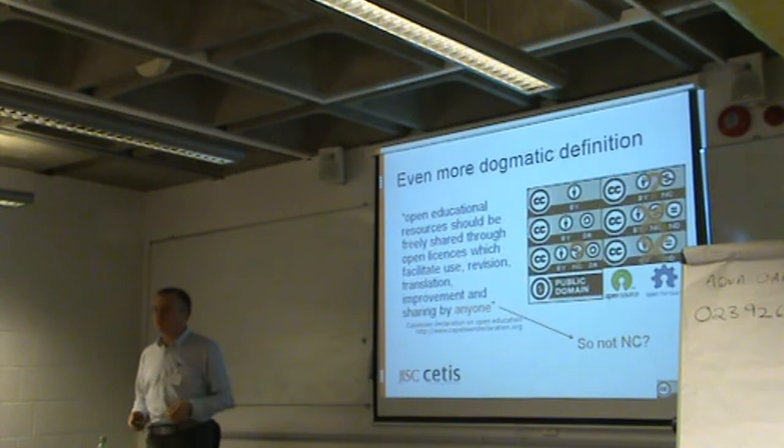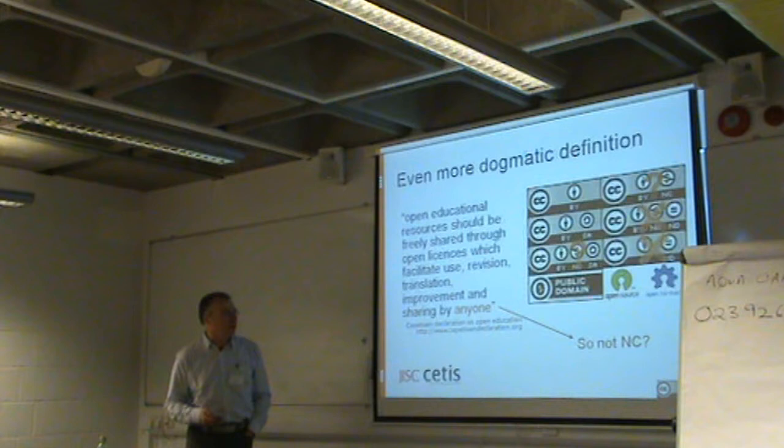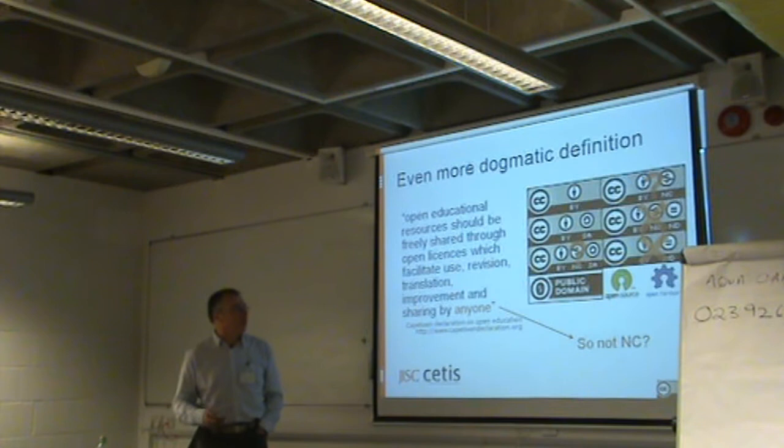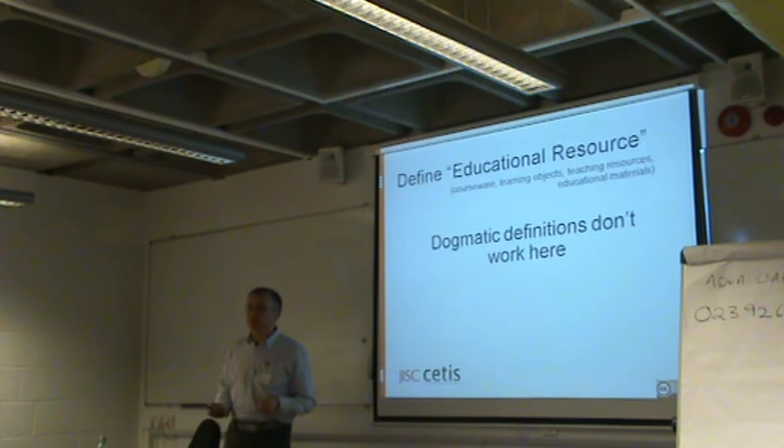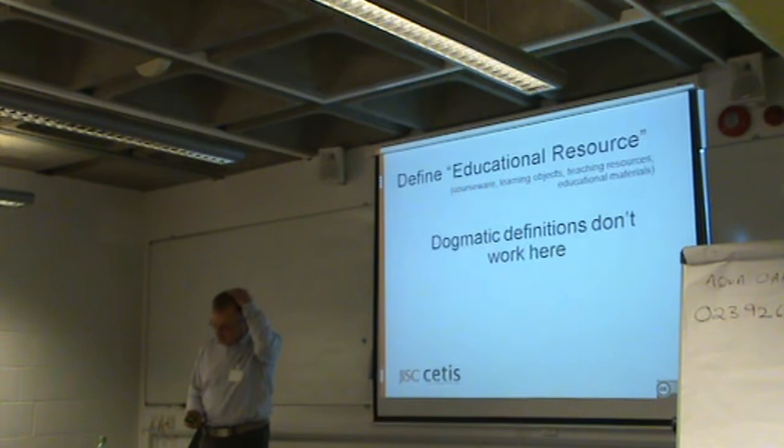That's maybe getting a little bit too dogmatic, but it does at least simplify the range of licenses that are of interest. Open educational resources, or courseware, or learning objects, or teaching resources, or educational materials — what is the difference between all of them? I think that dogmatic definitions don't work here.